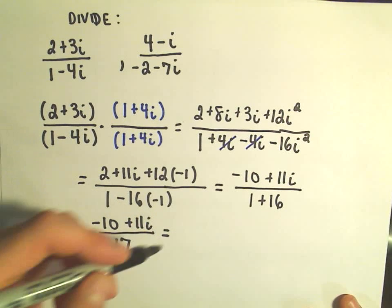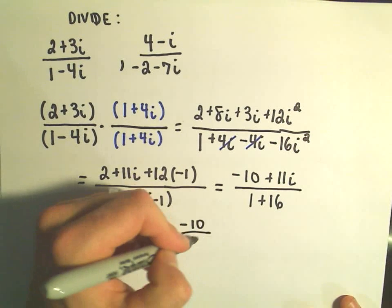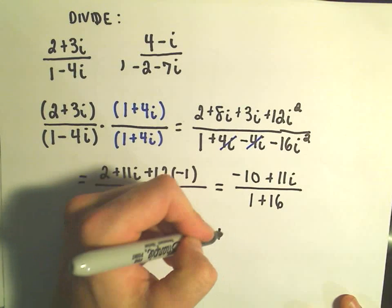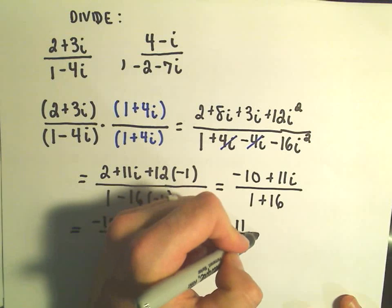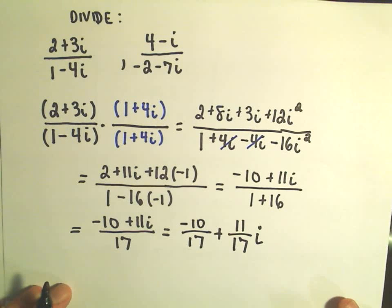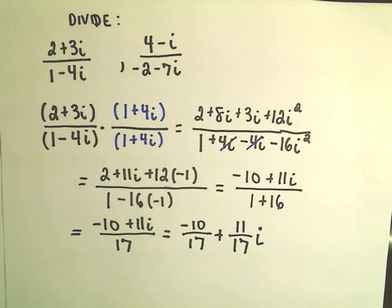We could simplify the denominator and make that 17. And the convention is typically just to break these up. So negative 10 over 17 plus 11 over 17i. You could stick the i on top in the numerator. I just pull it out to the side. And we've now done the division. We've multiplied by the complex conjugate and we've simplified it down.